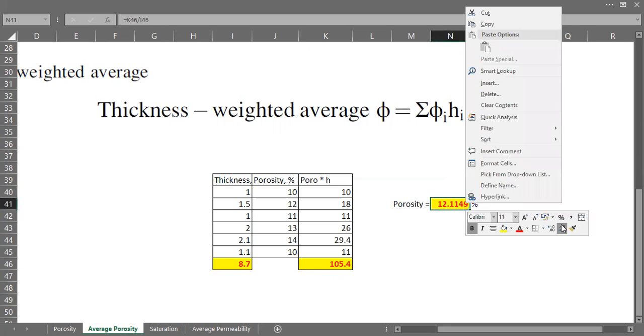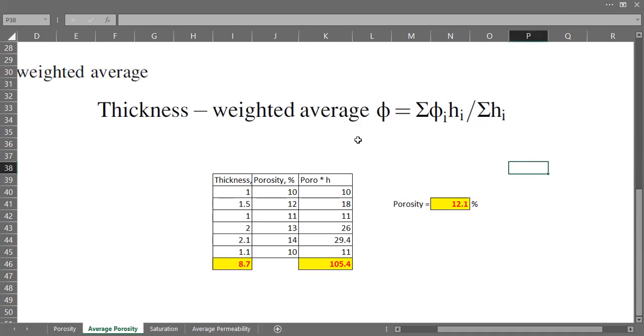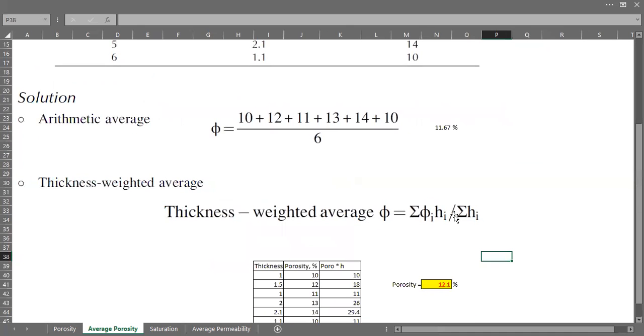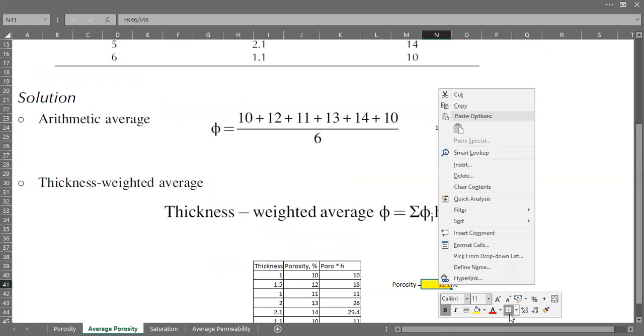The thickness-weighted average porosity that we should use is actually 12.1 percent, whereas the simplistic arithmetic average porosity is 11.67—different, right?